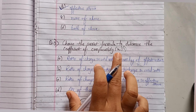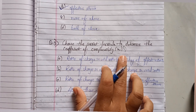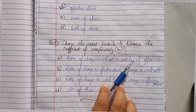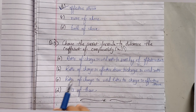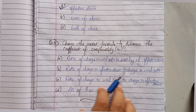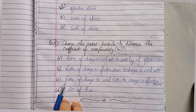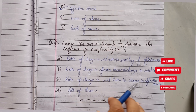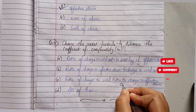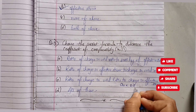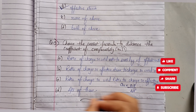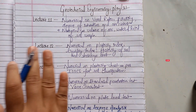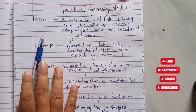Question nine: choose the correct formula to determine the coefficient of compressibility av. Option A is the ratio of change in void ratio to the semi-log of effective stress; option B is the ratio of change in effective stress to change in void ratio; option C is the ratio of change in void ratio to change in effective stress. The coefficient of compressibility av equals Δe divided by Δσ', so option C is correct.